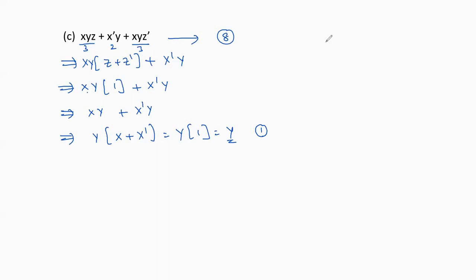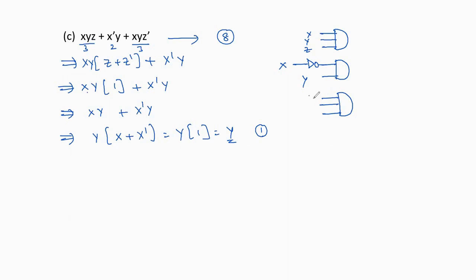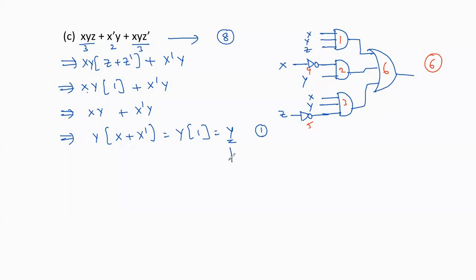The logic diagram for the given expression requires three AND gates, two NOT gates (for x' and z'), and one OR gate — totaling 6 logic gates. The simplified expression y requires only one buffer, so only 1 logic gate is needed. This is the reason why we simplify to the minimum number of literals.